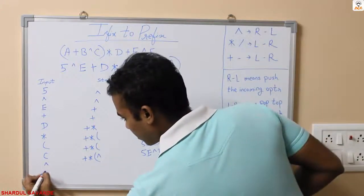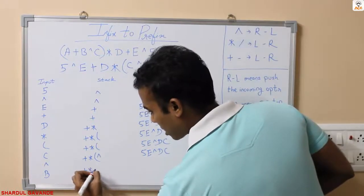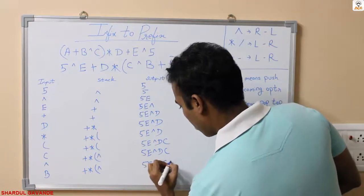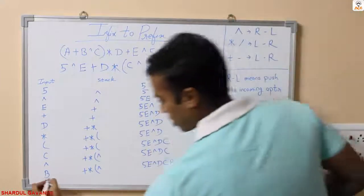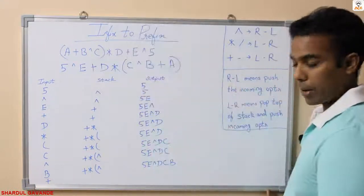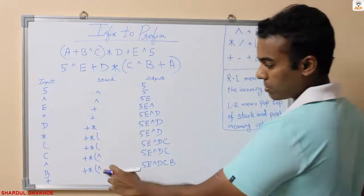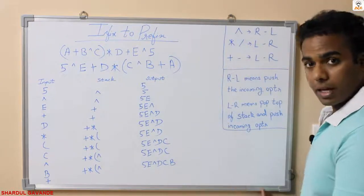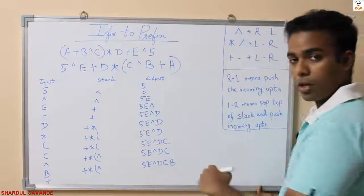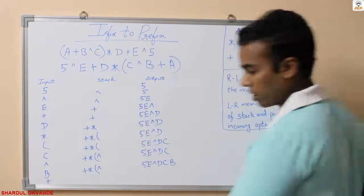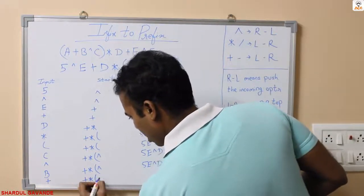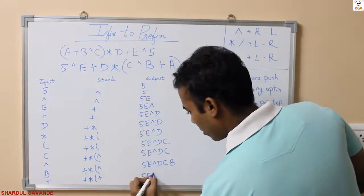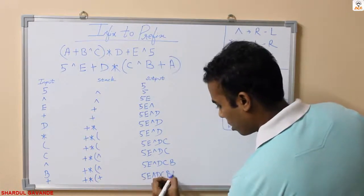Next is B — it is a character, so no changes in the stack. Directly push B to the output. After B I have plus. Plus is an operator, so check with the top element of the stack. We have power at the top, and the incoming operator is plus. Top element power is greater than the incoming operator, so simply pop out the top element of the stack and push the incoming operator. Stack becomes plus, star, open bracket, plus. Output: 5, E, power, D, C, B, power.